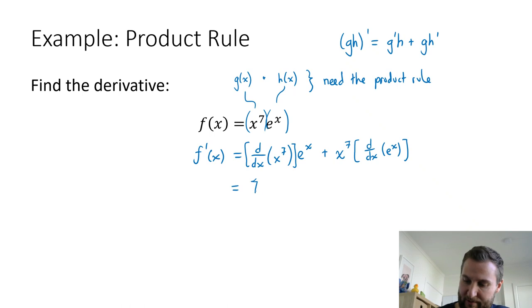I'll use the power rule: 7x^6. Then e^x—there's no derivative there. Nothing changes. Just rewrite that. My next term x^7 stays the same. Now my standard derivative of the exponential function is itself. So that becomes e^x. At this point you're done. You've done the calculus. You've done the derivatives.